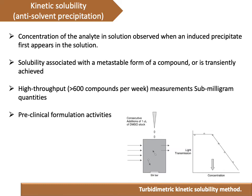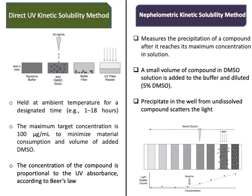In the turbidimetric method, the compound dissolved in DMSO is added to an aqueous phase — either water or a buffer. Until the precipitation point is reached, 100% light transmission occurs through the solution. When precipitation starts, there is a decrease in transmission, and a sudden fluctuation appears on the graph. If you extrapolate that point onto the concentration axis, you will get the kinetic solubility of the compound.